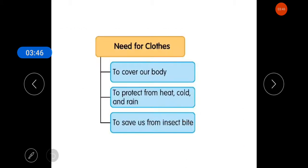Now, students, look at the table. You need to make this table in your notebook. So, need for clothes to cover our body, to protect from heat, cold and rain, to save us from insect bite. I hope it is clear.